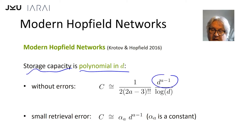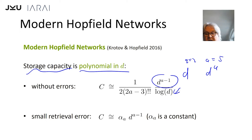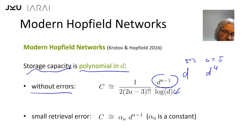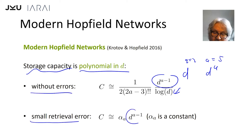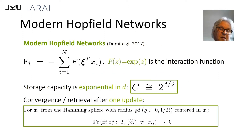The storage capacity is d to the power of a minus one. For a equals two it's d; for a equals five it's d to the power four. We divide by log d but that's a minor factor. This is without errors; if we allow small retrieval errors it's also polynomial in d, where d is the dimension of the patterns.